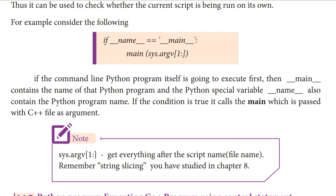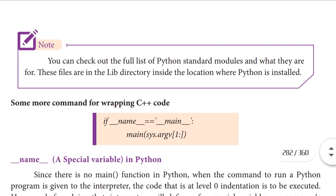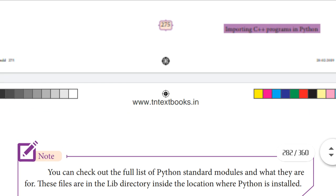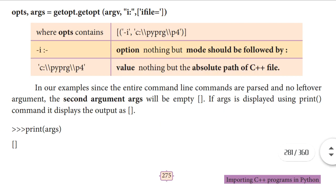So here, already in chapter 8 you learned about string slicing. String slicing means from a list, you specify which value you want to display, from where to start, where to end — everything you can mention in that list. So that is string slicing. That is all in this video — in this video you learned about the getopt module. This is very important — read this one or two times. Thank you students.